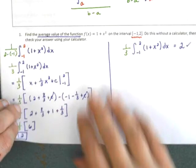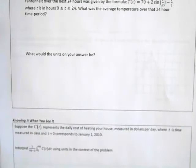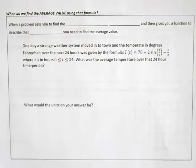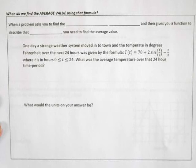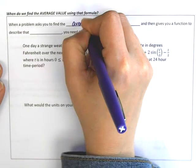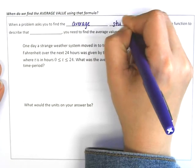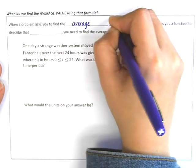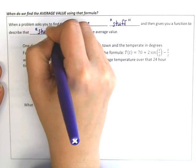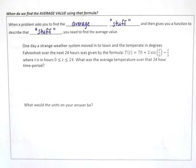Now let's look at some applications of average value. When do we use that formula? When a problem asks you to find the average amount of something — I'll call it 'stuff' — and gives you a function that describes the amount of that stuff, that's when you know you need to find the average value.